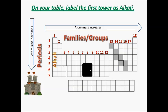Different families on the periodic table have different names. The first family I want to talk about is the alkali family — go ahead and label the first column on your periodic table 'alkali family.' The alkali family includes elements like lithium, sodium, and potassium. These are truly metals and they have one valence electron, which makes this a highly reactive family — so much so that they even react with water. Let me show you a video about how these metals react in water.